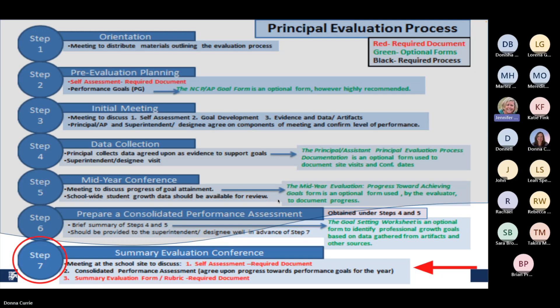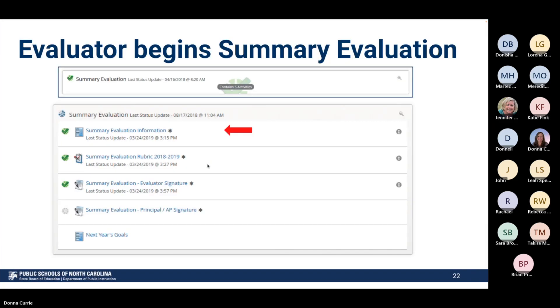Step seven is your summary evaluation conference — the final step in your principal evaluation process for the school year. That conference should take place at your school site and should include discussion of your self-assessment, the consolidated performance assessment, and your summary evaluation form, which is your rubric. You should be prepared in advance for the meeting, where you'll meet with your evaluator to discuss next year's performance goals. The required documents are shown in red within step seven — the state only requires a self-assessment and the summary evaluation form to be completed within NISIS itself.